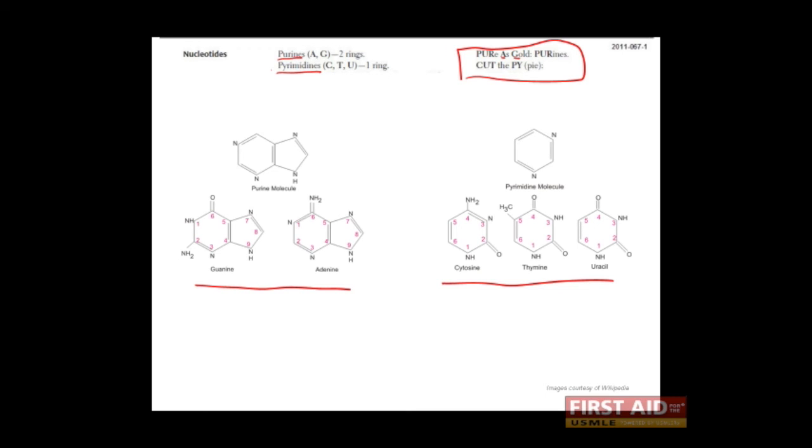Another feature which increases the melting temperature of DNA is the length of the DNA. The longer the strand, the higher the melting temperature because there are more bonds between the two strands.